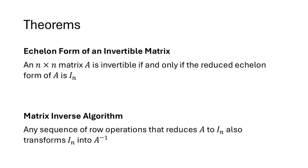We've seen why elementary matrices are invertible and how to find their inverses, but most matrices aren't elementary matrices. We have two theorems for a generic n by n matrix. The first says an n by n matrix is invertible if and only if the reduced echelon form of A is I_n. The second says any sequence of row operations taking A to I_n would also take I_n to A inverse.